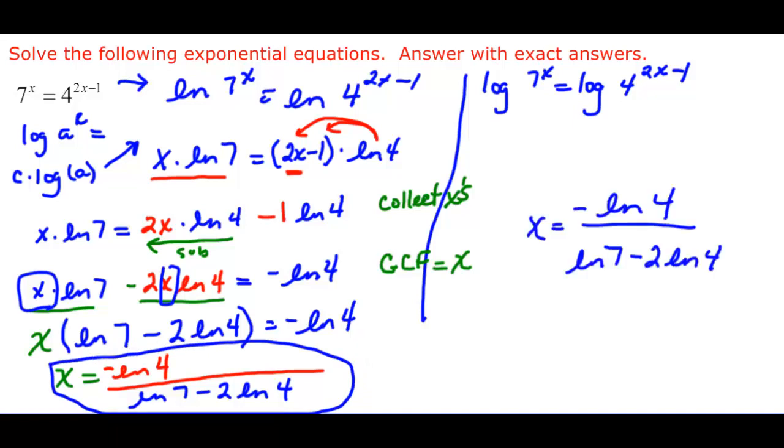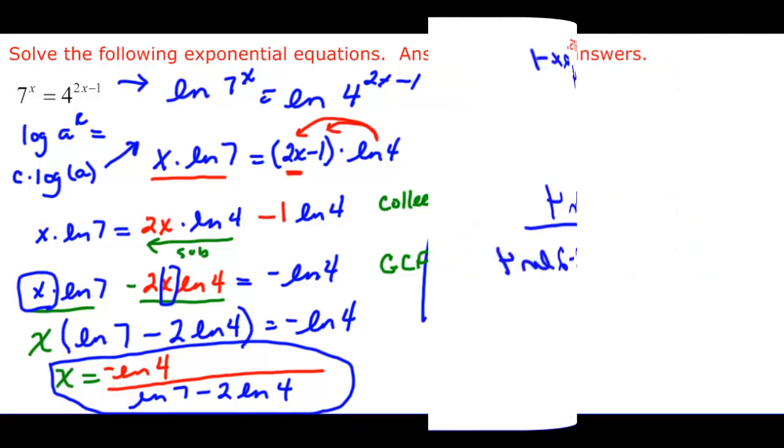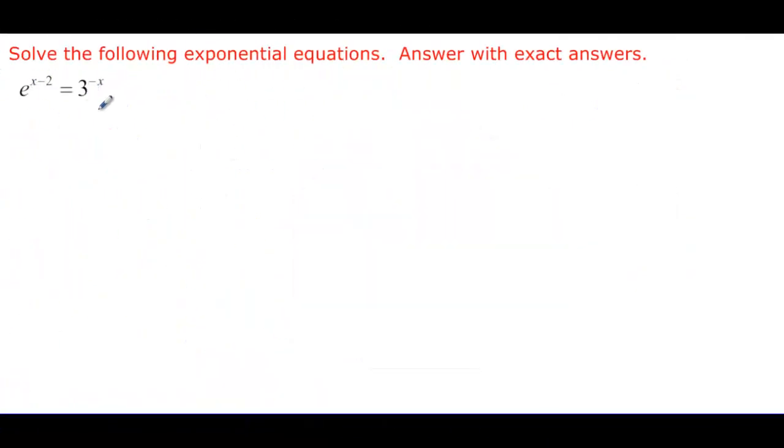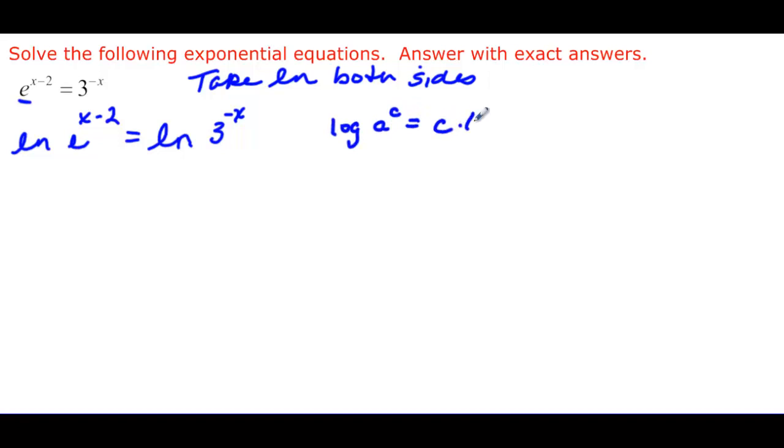Okay, now take some time and try the next problem before you watch how the solution happens. Again, we have different bases. And this time we do have a base of e. So I definitely want to take, in this case, the natural log of both sides. And then we want to apply the property that says log a^c is equal to c times the log of a.